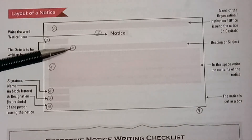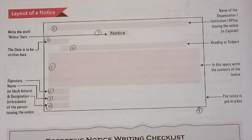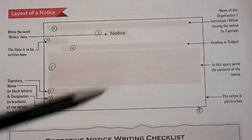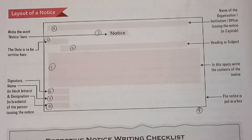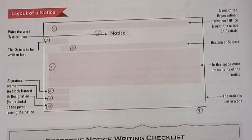After that, the fourth number is to write the heading or subject of your notice. After that, number five comes — all your details, which includes all the contents. And contents may include date, time, venue — what the venue is, the place where it is to be conducted — whatever things are required. It all depends upon your notice, and you will get to know what things are required and what kind of notice gradually.